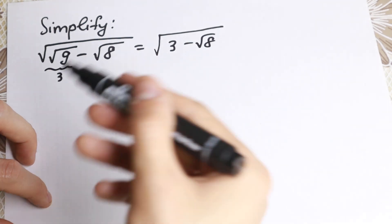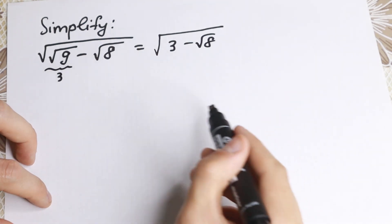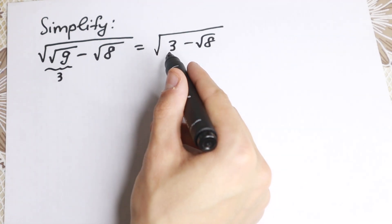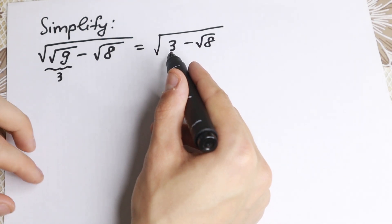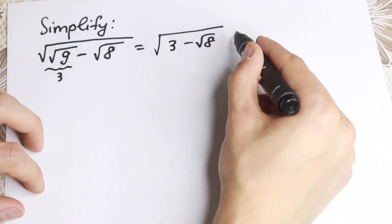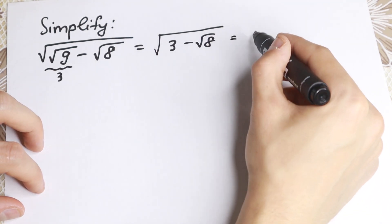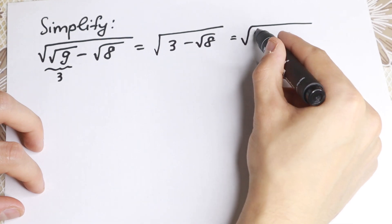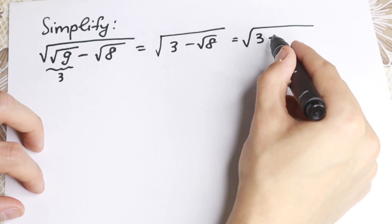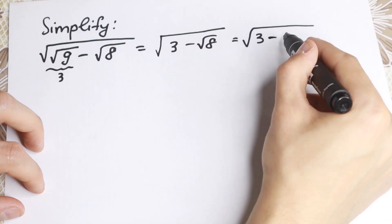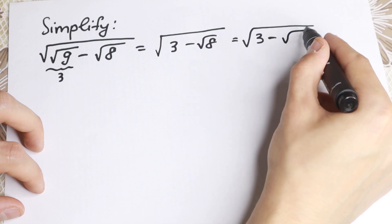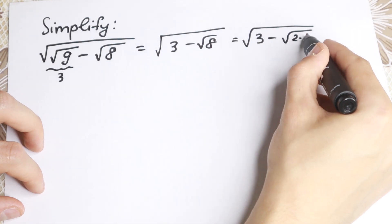Let's simplify this step by step. What about this 3? We cannot simplify it further — this is a prime number, so we cannot write it in another way. What about square root of 8? We can write it as 2 times 4, which is really good. So square root of 2 times 4.